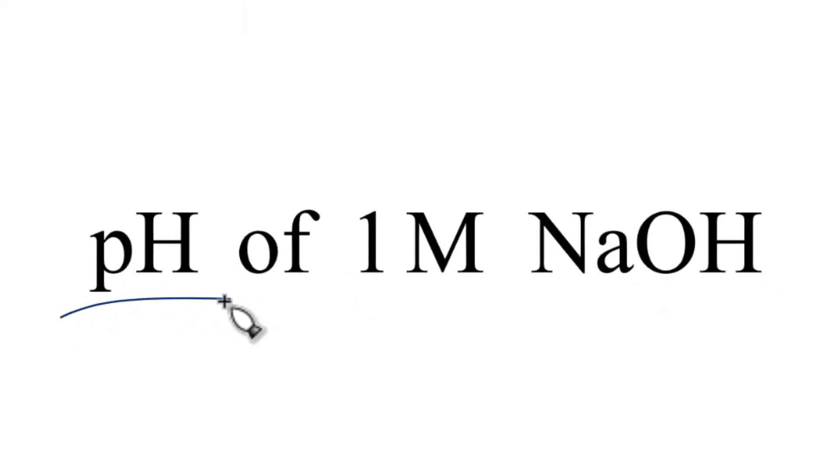Alright, let's find the pH of 1 molar NaOH. The first thing you need to realize is that NaOH has sodium, which is a metal. When you have a metal bonded to an OH group, this is hydroxide.